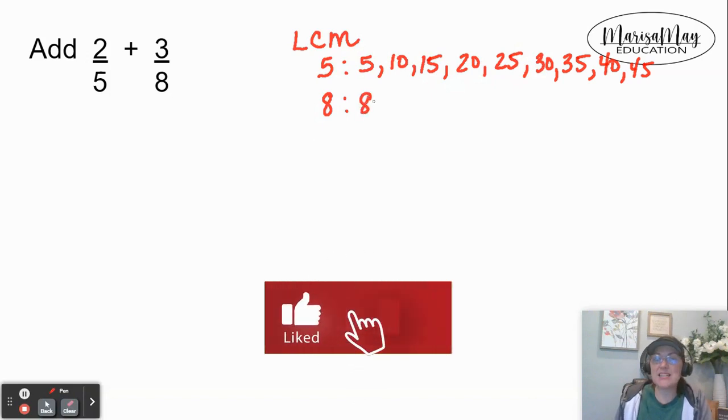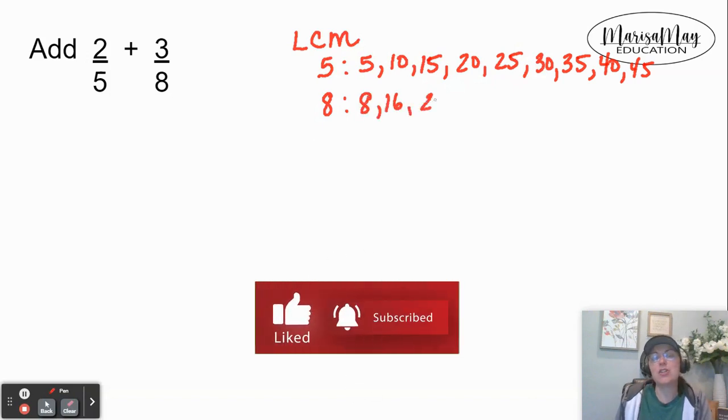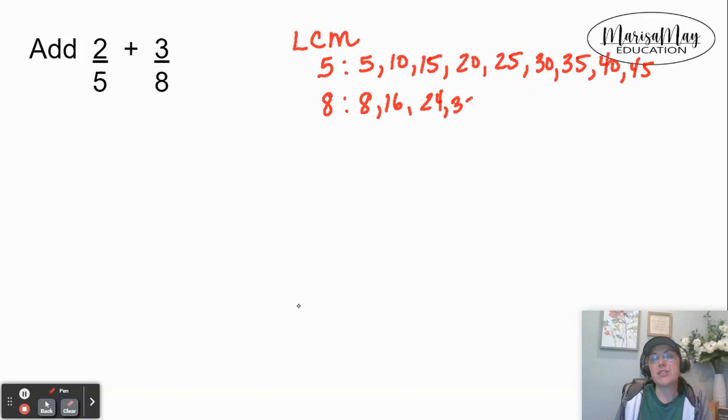Then we'll skip count by eights: eight, 16, 24, 32, 40. Oh, I've got one now. So 40 is going to be my common denominator.